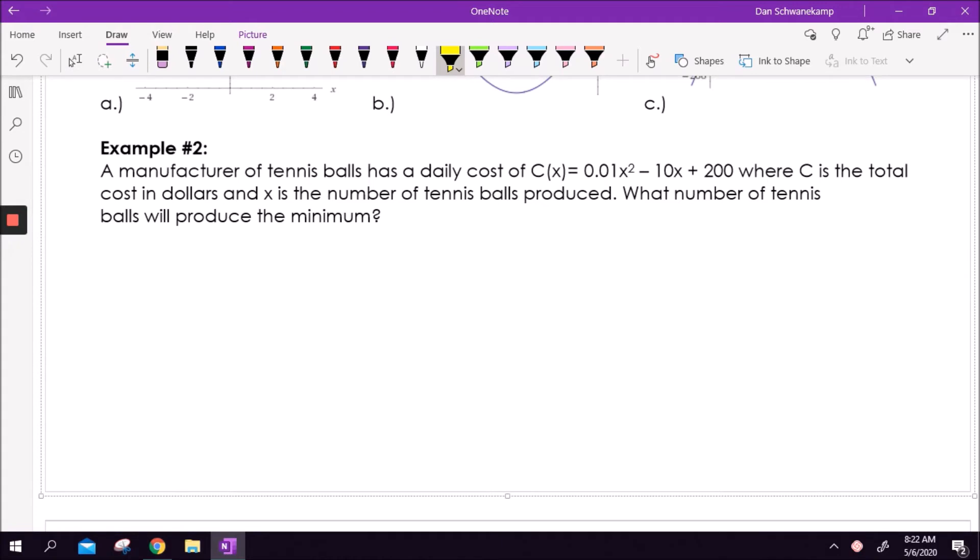Let's continue with example 2. A manufacturer of tennis balls has a daily cost given by C(x) = 0.01x² - 10x + 3000. One of the most important things is labeling stuff. This C(x) equation is going to tell you the cost of the tennis balls, where C is the total cost in dollars and x is the number of tennis balls produced. What number of tennis balls will produce the minimum cost? The key to this problem is understanding this picture. It's a 0.01x² equation, so it's a parabola and it's positive, so it's opening up. If I want to find the minimum, I'm going to find the vertex of this parabola.